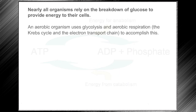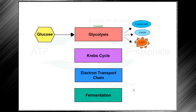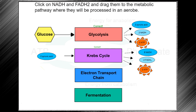Nearly all organisms rely on the breakdown of glucose to provide energy to their cells. An aerobic organism uses glycolysis and aerobic respiration to accomplish this. Let's drag the glucose molecule to the first metabolic pathway used in aerobic organisms, then drag the pyruvic acid to the metabolic pathway where it will be processed in an aerobe.